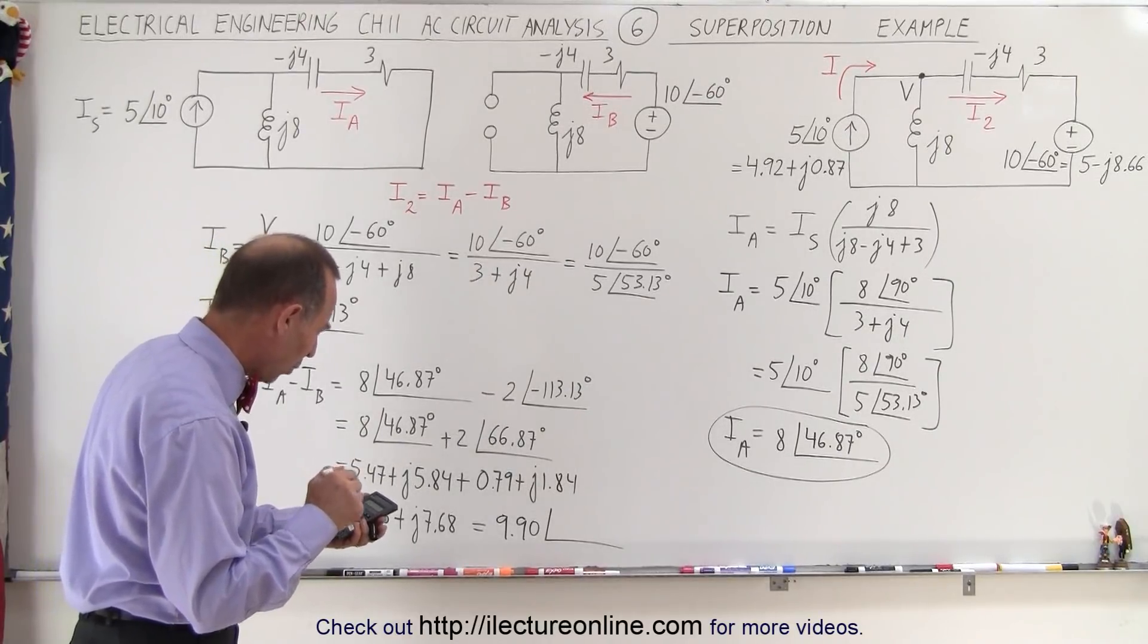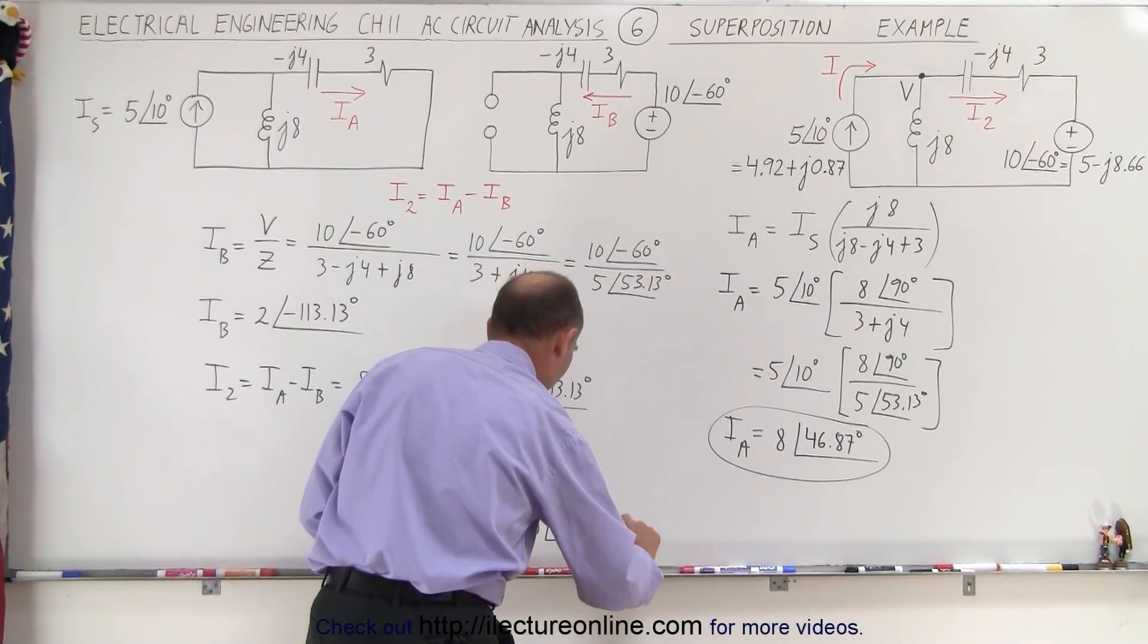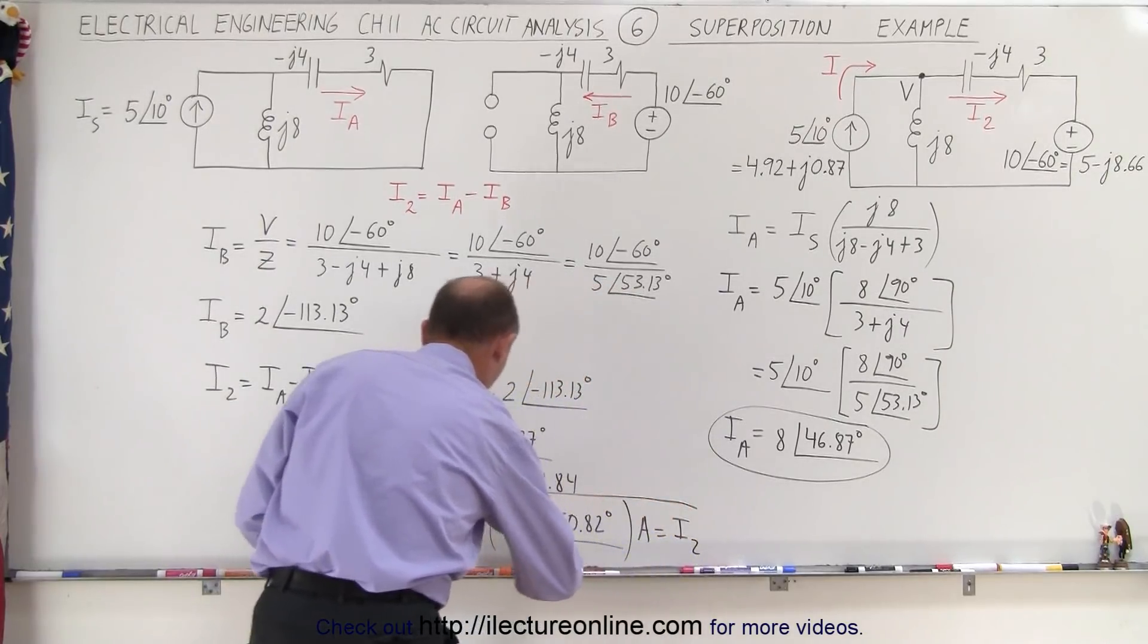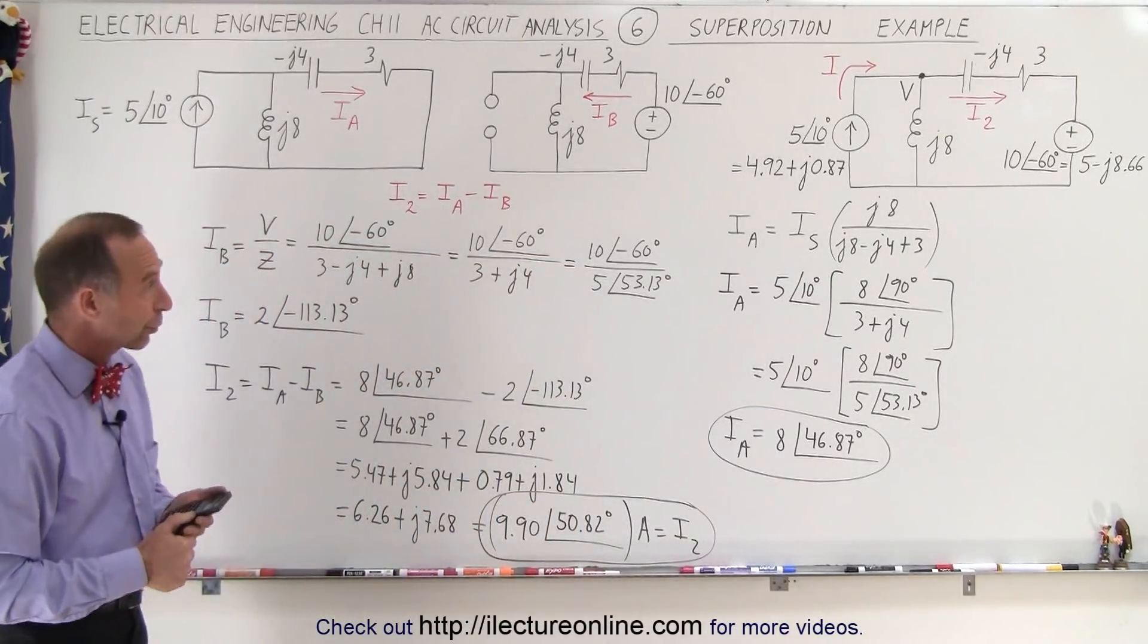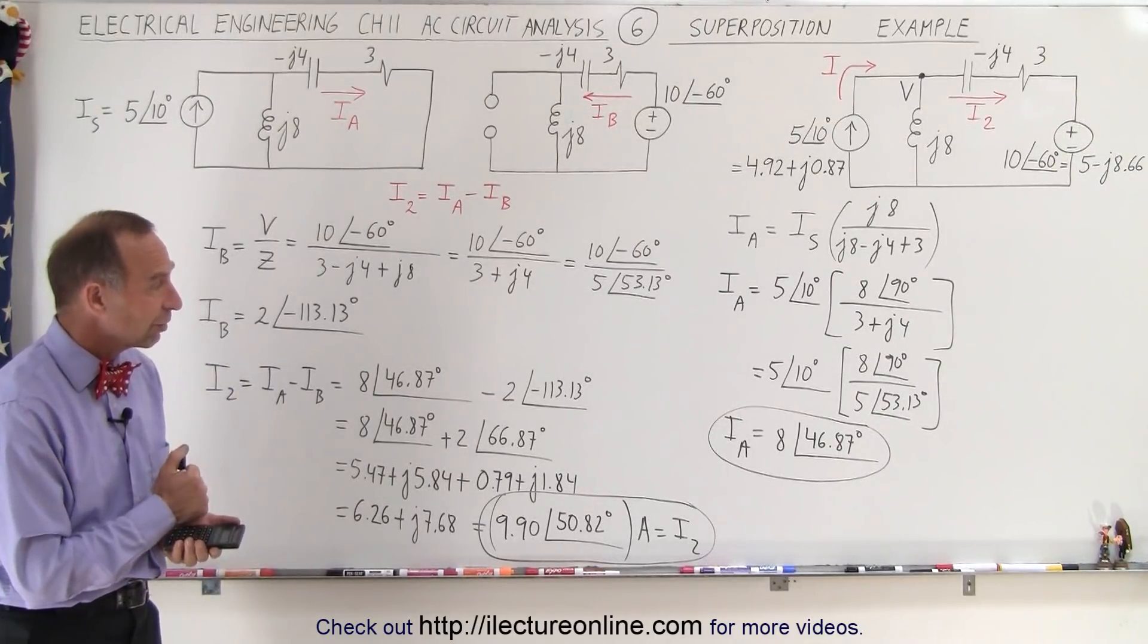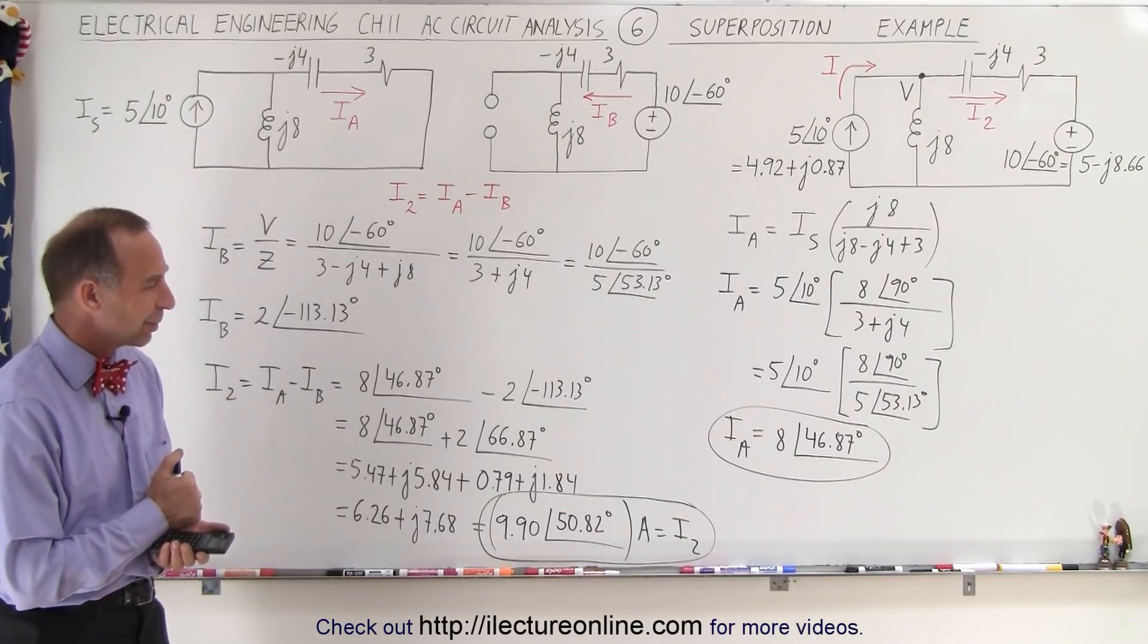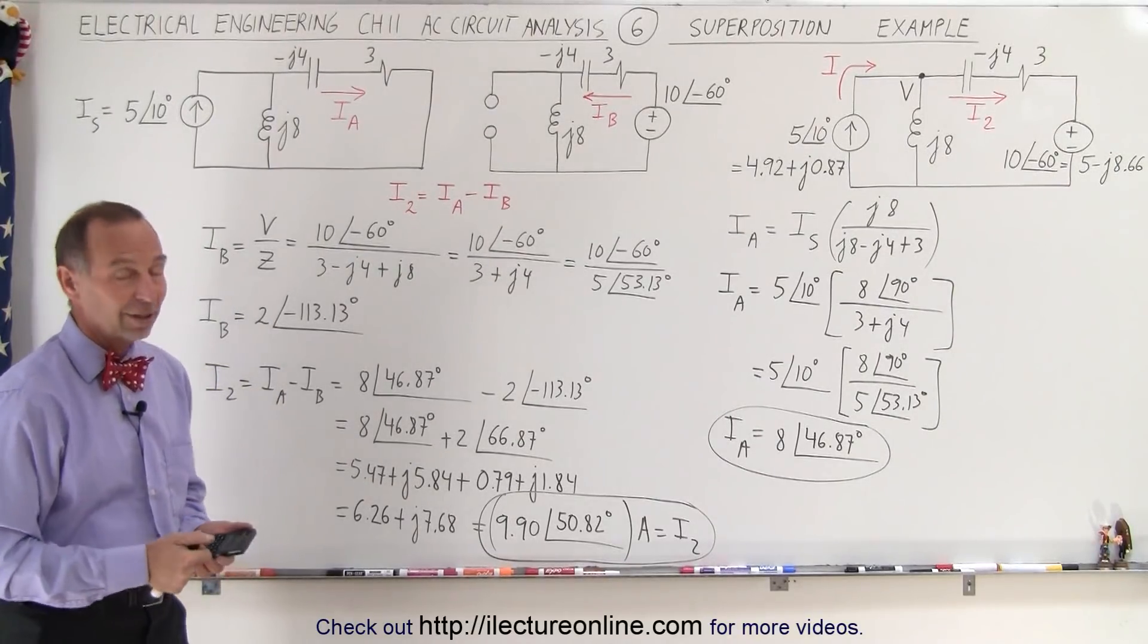50.82 degrees, and of course that's amps, and this would be i2. And looks like again very close to what we got on the previous two videos for the current i2. So actually I like this method because it makes the mathematics or the arithmetic just a little bit easier. But here we go, there's the third method, superposition, on the very same circuit. And hopefully we'll continue getting the right answers on the next three examples on the next three methods. So stay tuned and you'll see how to use the additional methods to solve a circuit like this.